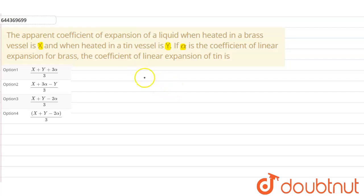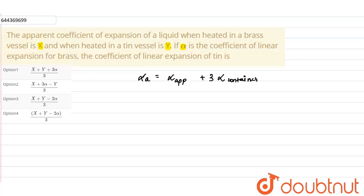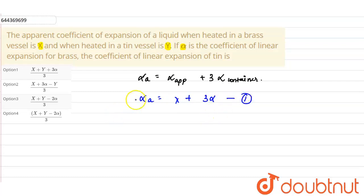As we know, the actual coefficient of expansion (alpha_actual) is given as the apparent coefficient of expansion plus three times the coefficient of linear expansion of the container. For brass, the apparent coefficient is x, so the actual coefficient of expansion for brass is x + 3α. Let this be equation 1.